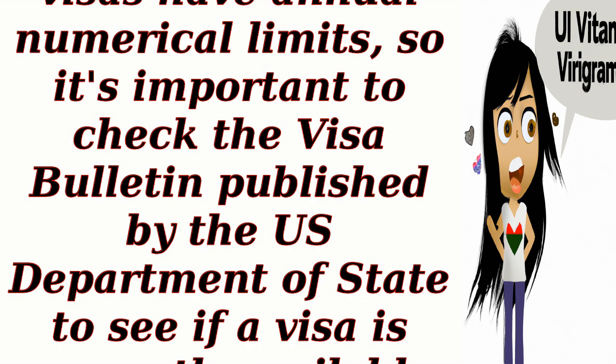Visa availability. Family preference visas have annual numerical limits, so it's important to check the visa bulletin published by the U.S. Department of State to see if a visa is currently available in the relevant category.